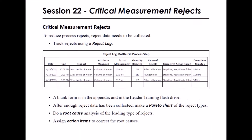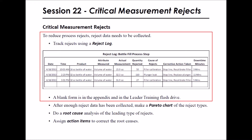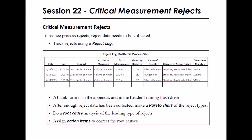When critical measurements are in effect, there will be outputs that fall outside the acceptable range and will be rejected. To reduce process rejects, reject data needs to be collected. Track rejects using a reject log — there is a blank form in the operator workbook and on the leader flash drive. After enough reject data has been collected, make a Pareto chart of the reject types, do a root cause analysis of the leading type of rejects, and assign action items to correct the root causes.